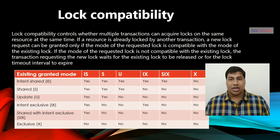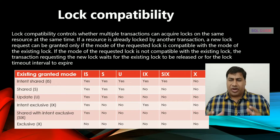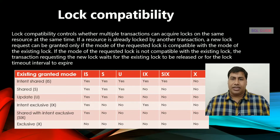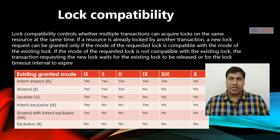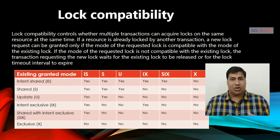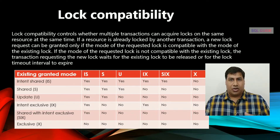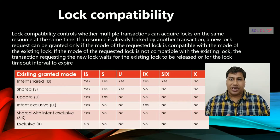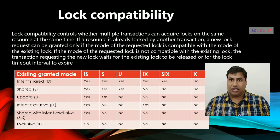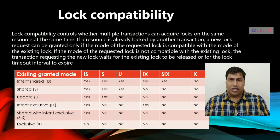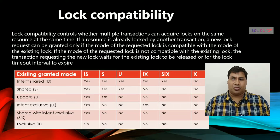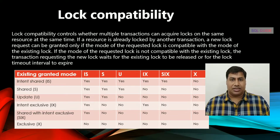What is lock compatibility? Lock compatibility occurs when one application holds a lock on an object and another application requests a lock on the same object. When the two lock modes are compatible, the request for a second lock on the object can be granted. If they are not compatible, the transaction will have to wait for the lock to be released.